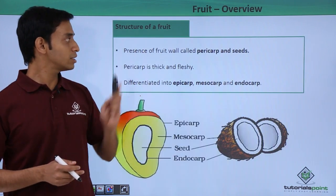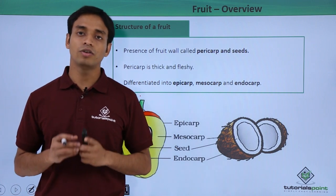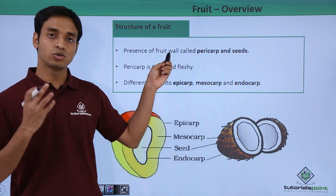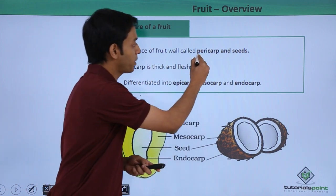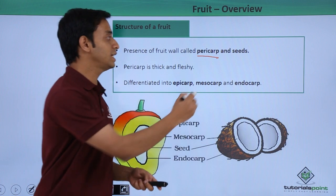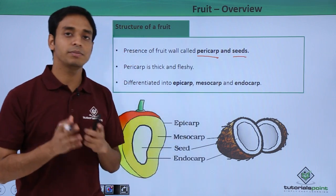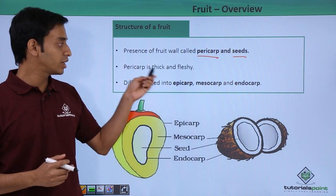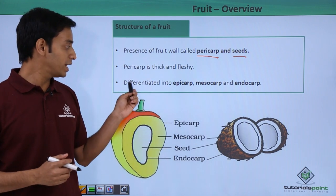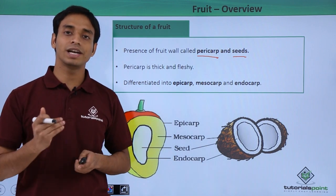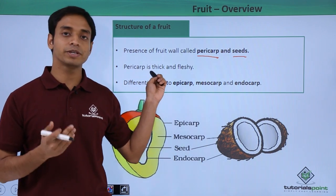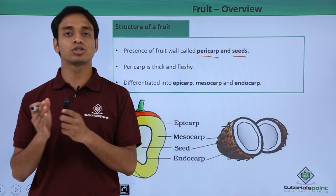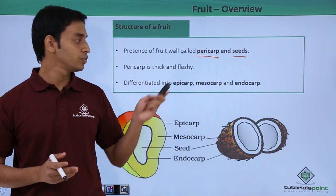Let us now look at the structure of a typical fruit. A fruit has a fruit wall known as the pericarp, and it may or may not contain seeds. The pericarp is thick and fleshy, and is mostly formed from the outer wall of the ovary after fertilization. It is differentiated into three distinct layers.